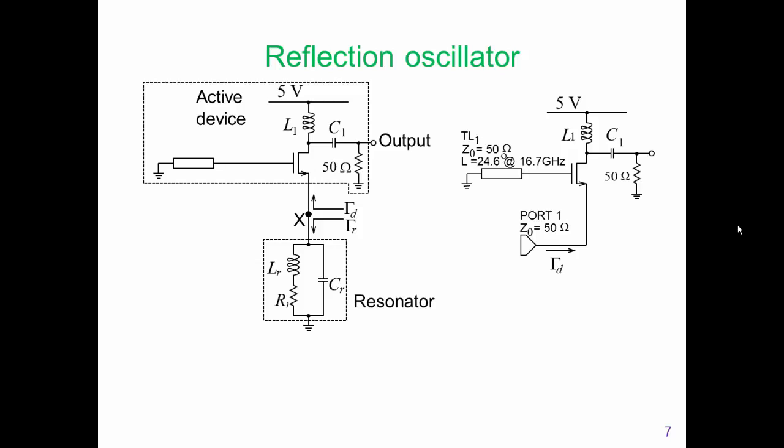When we design, we want to have some idea of where we're going. It is very difficult to design transistor oscillators using a two-port feedback network. Instead, we use the idea of reflection coefficients. We're going to look at the reflection coefficient looking into the passive circuit — the resonator — and the reflection coefficient looking into the device. The reflection coefficient looking into the active device will depend on the level of the signal at the output, or the level of the signal at x.